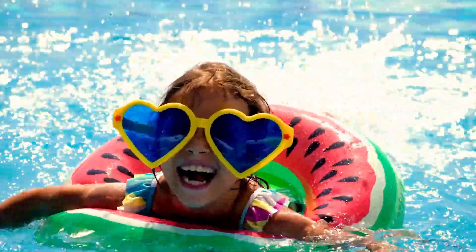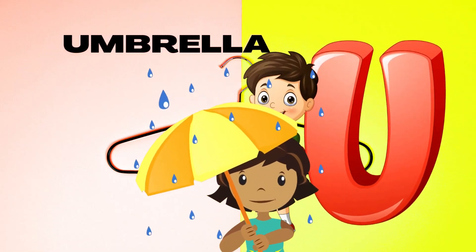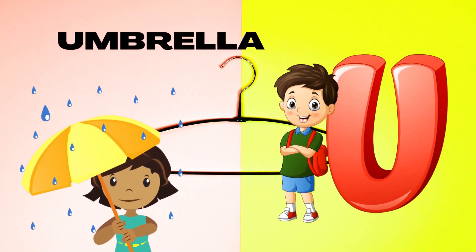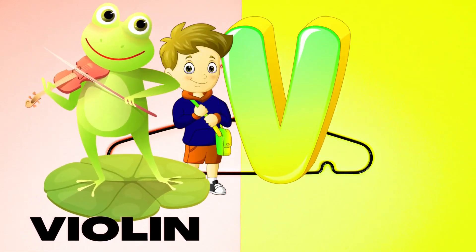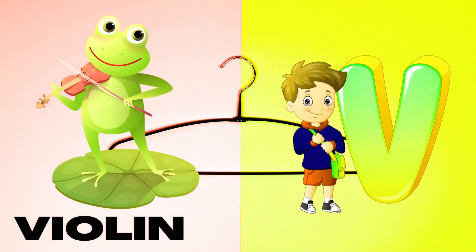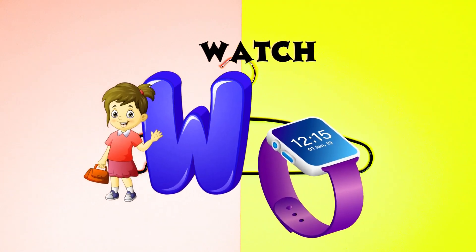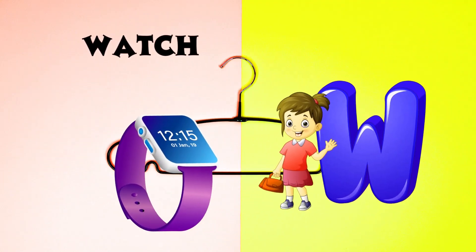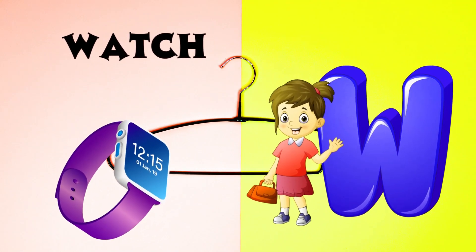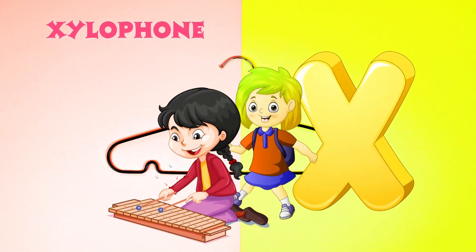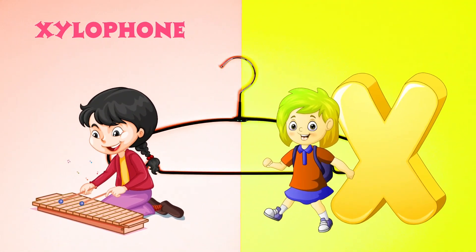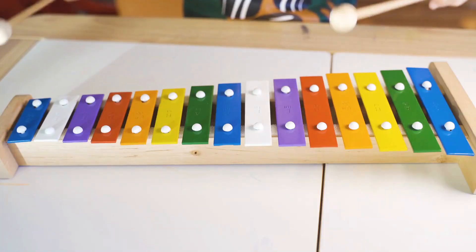U is for Umbrella, U-U-Umbrella. V is for Violin, V-V-Violin. W is for Watch, W-W-Watch. X is for Xylophone, X-X-Xylophone.